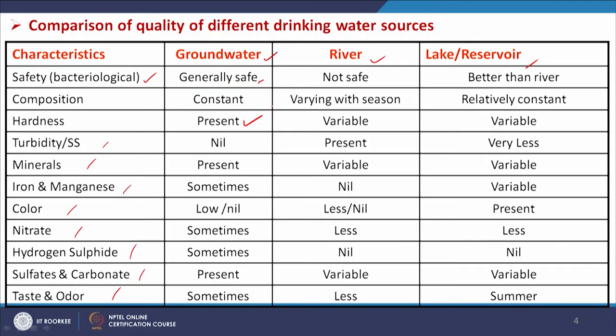In the case of ground water, hardness and different types of ions are mostly available. Taste and odor are also sometimes present. TSS is normally not available in ground water, whereas TSS is available in river water and is less present in reservoir water.